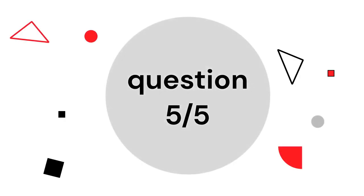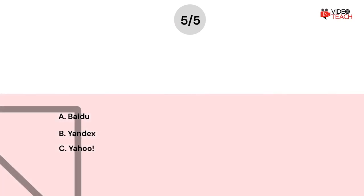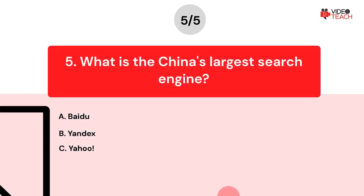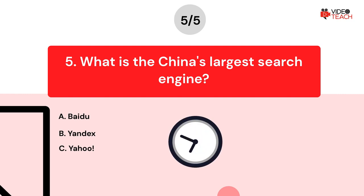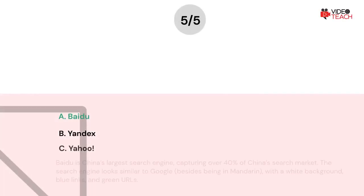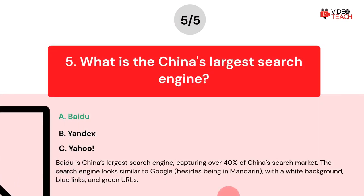Question number five. What is China's largest search engine? Option A: Baidu. Option B: Yandex. Option C: Yahoo! Now you have about 15 seconds to think about your answer. The correct answer is Option A. Baidu is China's largest search engine, capturing over 40% of China's search market. The search engine looks similar to Google besides being in Mandarin, with a white background, blue links, and green URLs.